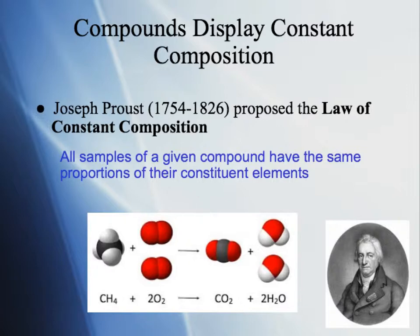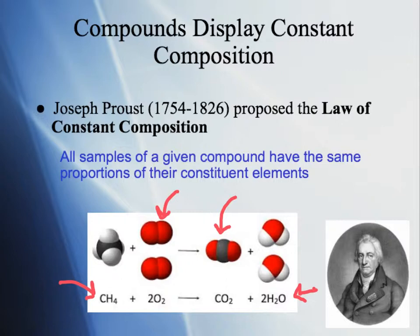Other examples: methane always has one carbon and four hydrogens. Oxygen atoms are always found as diatomic gases — two oxygen atoms bound together. Carbon dioxide is always found as one carbon bonded with two oxygens. Water is always two hydrogens and one oxygen. He found that compounds always have the same proportions of their constituent elements. If any proportions are different, it is a different compound with different properties.